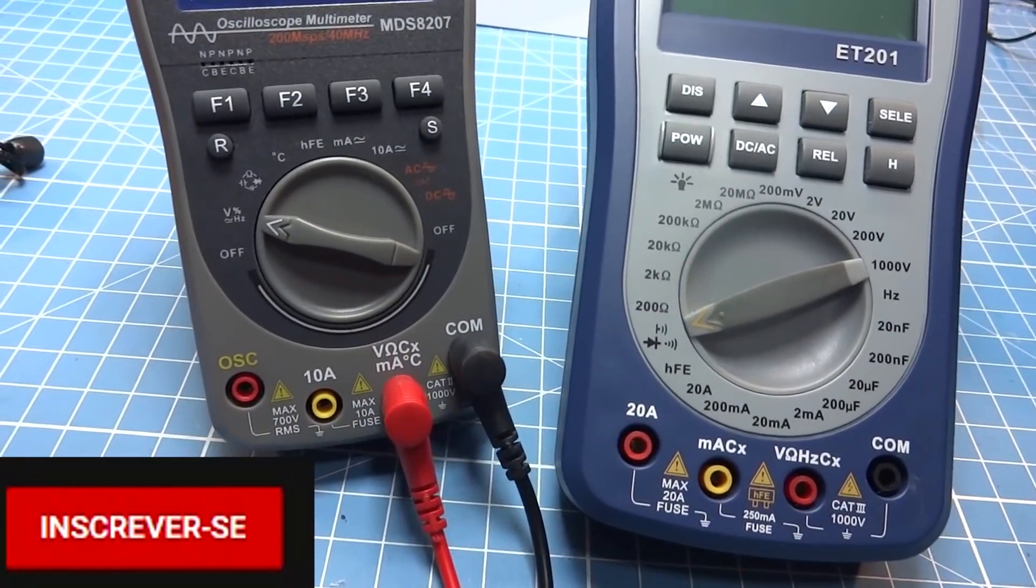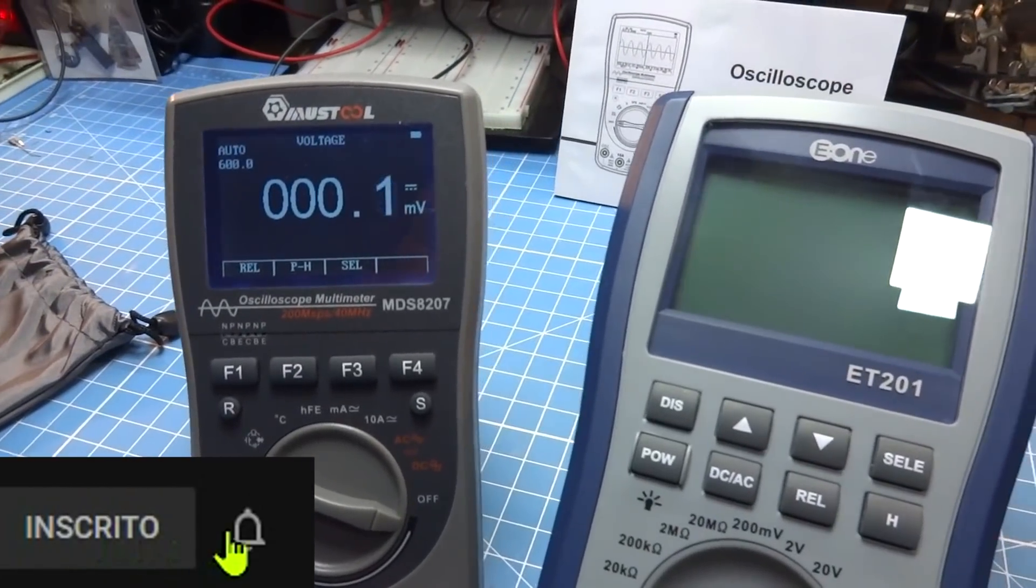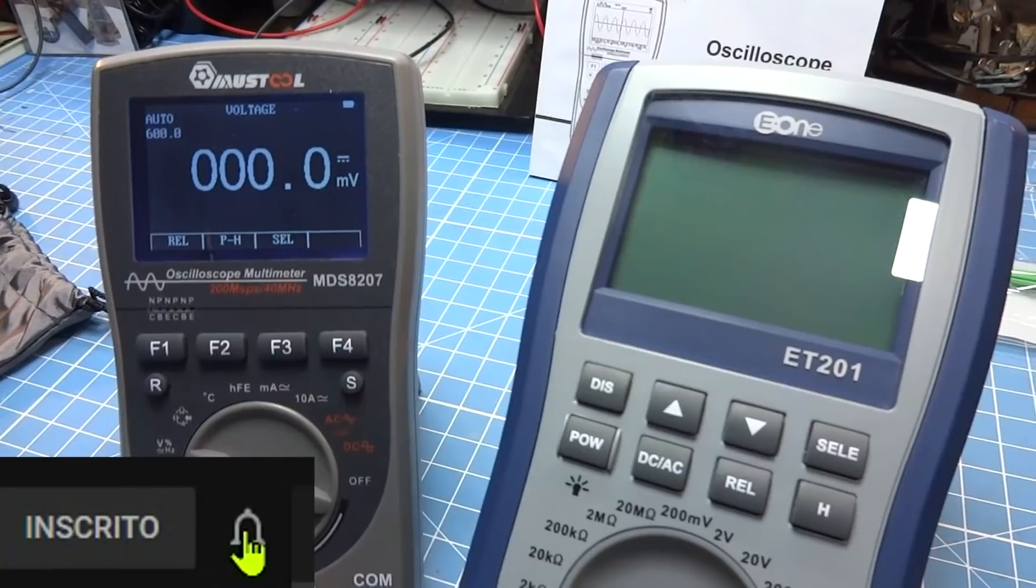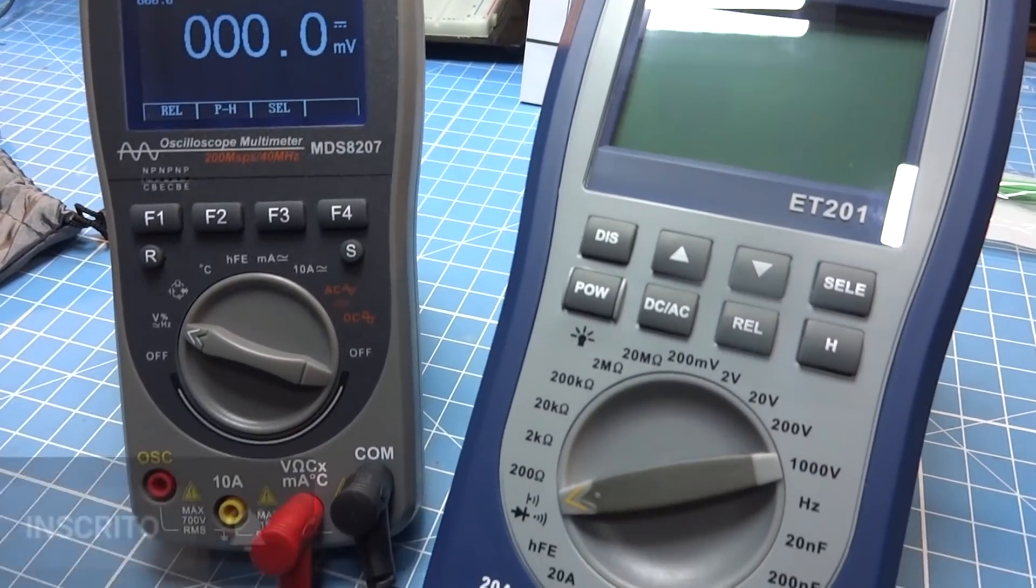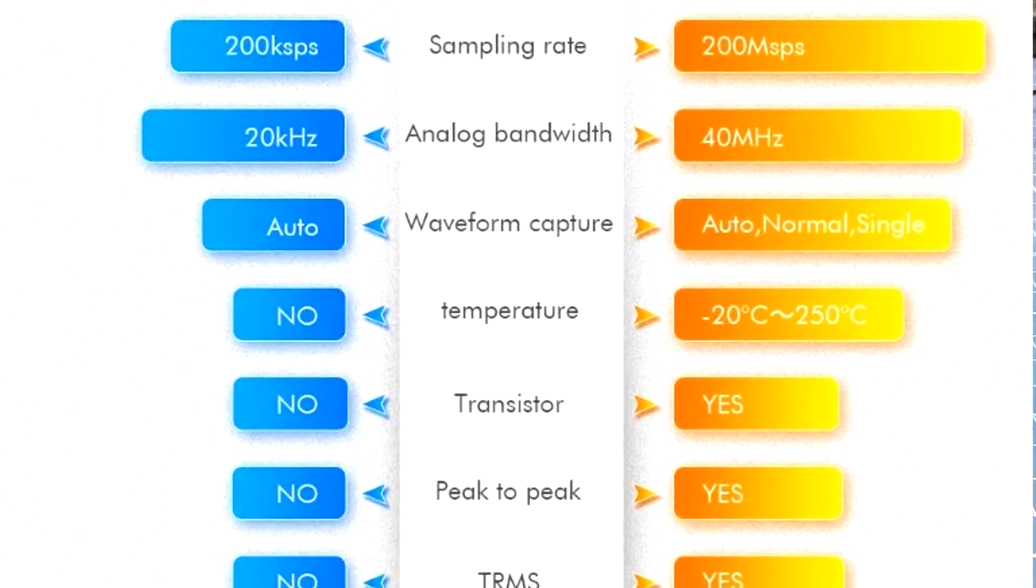Eu sei porque eu comprei, e eu tenho o ET-201, com a esperança de ter um multímetro-osciloscópio em um só equipamento. Mas foi bem decepcionante. Não é um multímetro ruim, mas também não é um osciloscópio de verdade.